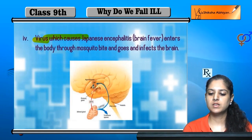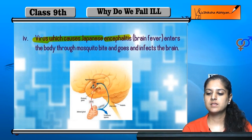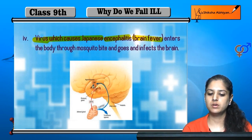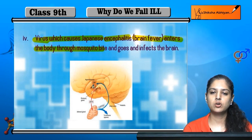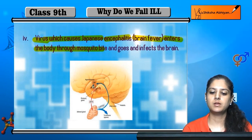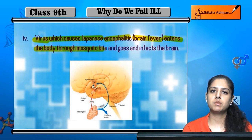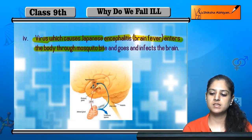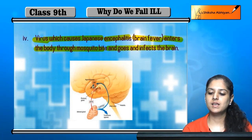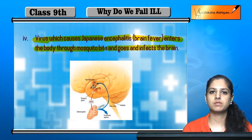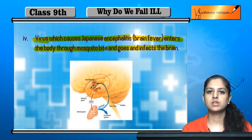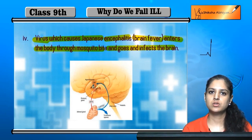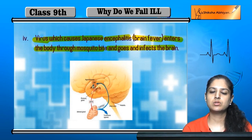A virus like Japanese encephalitis, also called brain fever, enters the body through a mosquito bite and goes directly to the brain, infecting it. These are some examples of organ-specific and tissue-specific manifestations where microbes target particular organs.